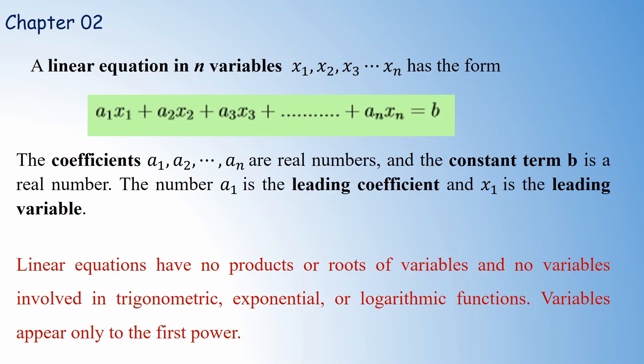Suppose we have a linear equation of n variables x1, x2, x3, ..., xn with the relationship a1·x1 plus a2·x2 plus a3·x3 and so on. In this case, the coefficients a1, a2, ..., an are all real numbers, and the right-hand side term b is also a real number. Here x1 is called the leading variable, and its coefficient a1 is known as the leading coefficient.